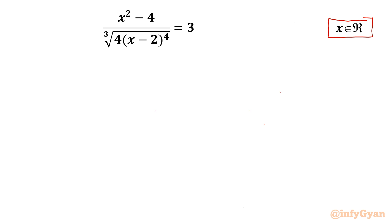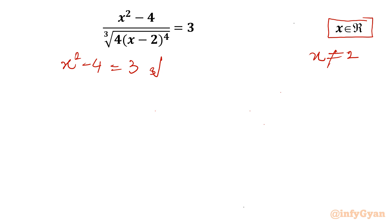Let's get started by writing that the denominator cannot be 0, so x cannot be 2. Now I will cross multiply the written terms, so the equation will become x² - 4 = 3 times the cube root of (4(x - 2))⁴.